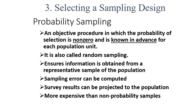The second point on your PPT is that probability sampling is also called random sampling. It ensures information is obtained from a representative sample of the population. Also, sampling error can be computed — this is something we had not discussed in the last lecture.